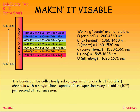Think of it this way: I've got many shades of red, and each shade can be a channel. Many shades of orange — each shade can be a channel. So the bands themselves can be collectively sub-multiplexed into hundreds of parallel channels, all going out on the same fiber at the same time. I can get huge amounts of bits or data through these kinds of systems.